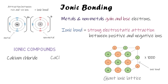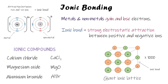Some examples of ionic compounds are calcium chloride, magnesium oxide, and aluminium bromide. In each of these, if you look at their formulas, we've got a metal and a non-metal. Calcium is a metal whereas chlorine is a non-metal; in magnesium oxide, magnesium is a metal and oxygen is a non-metal.